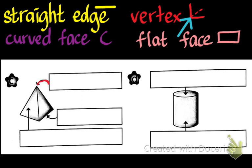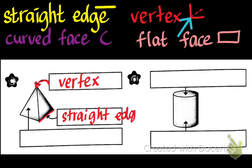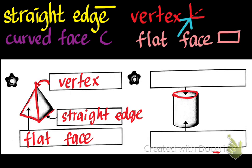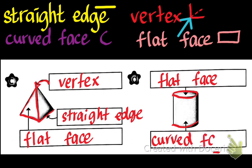What is this one, what do we call it? Do you remember? It's a vertex. It's a vertex. This is a straight edge. How about this thing here? We call it flat face.